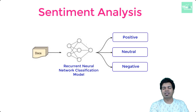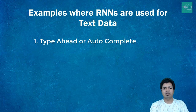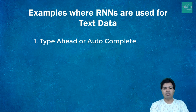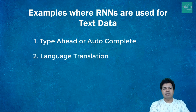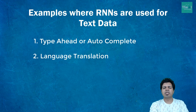Let me cite a few real-world examples where we use RNNs with text data. Number one is type-ahead or autocomplete, where you predict the next word in a sequence — we generally see this in search engines like Google. I've covered a separate video on this topic. Number two is language translation, where it accepts an input sequence of words in, say, English and translates that sentence into corresponding words in another language such as Hindi.